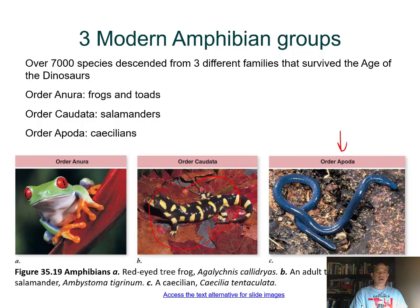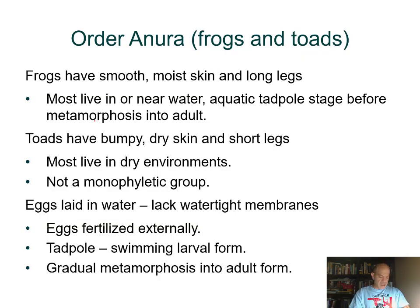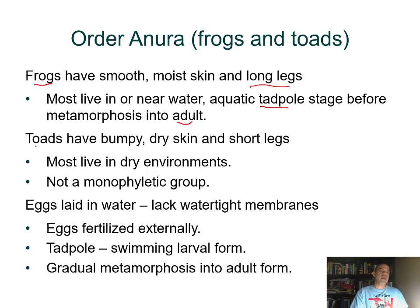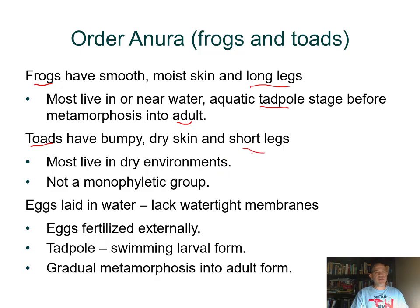A tiger salamander belongs to order Caudata, and the red-eyed tree frog belongs to order Anura. About 7,000 species total are identified today. In the order Anura, frogs have smooth moist skin and long legs good for swimming. Most live near water and go through a larval tadpole stage, then metamorphosis to froglets that grow into sexually mature adults. Toads are their drier-skinned relatives, with more keratin in their skin to reduce water loss, shorter legs, and they live in drier environments, but still return to water to reproduce.